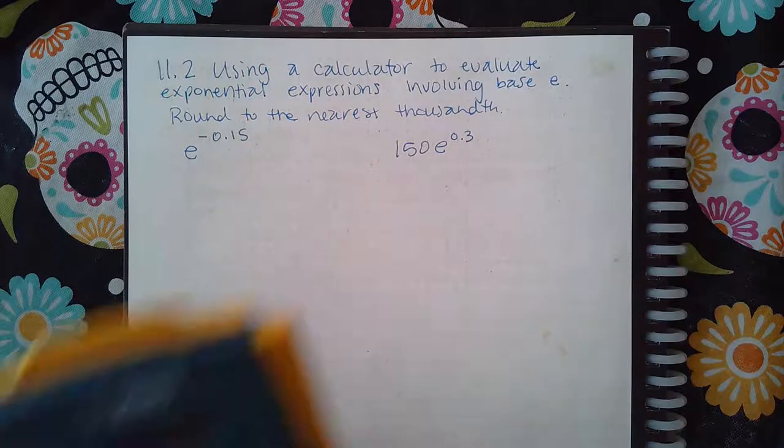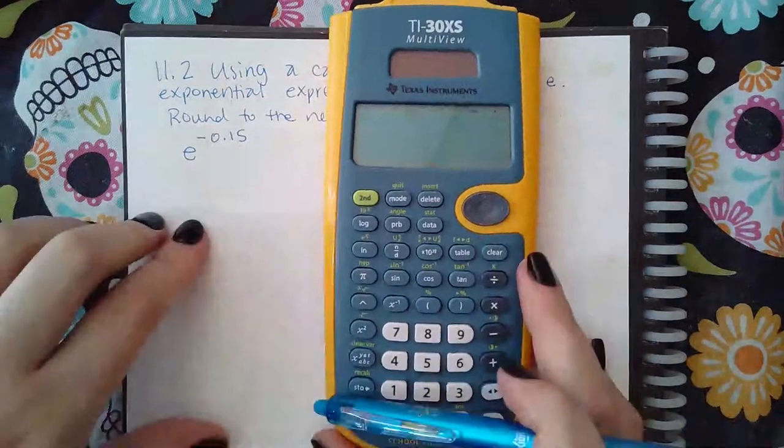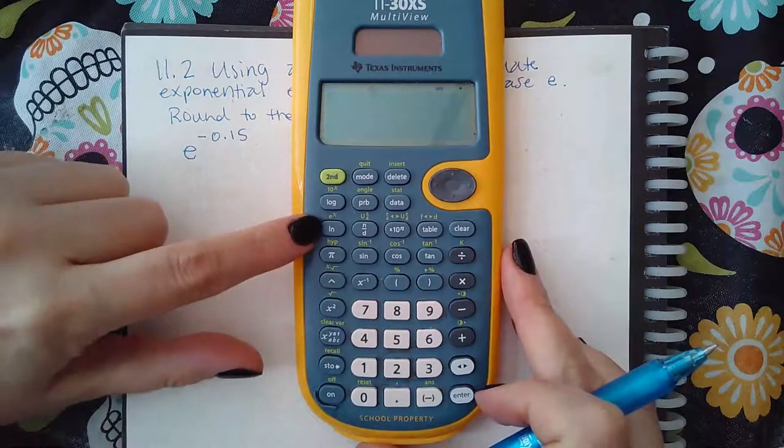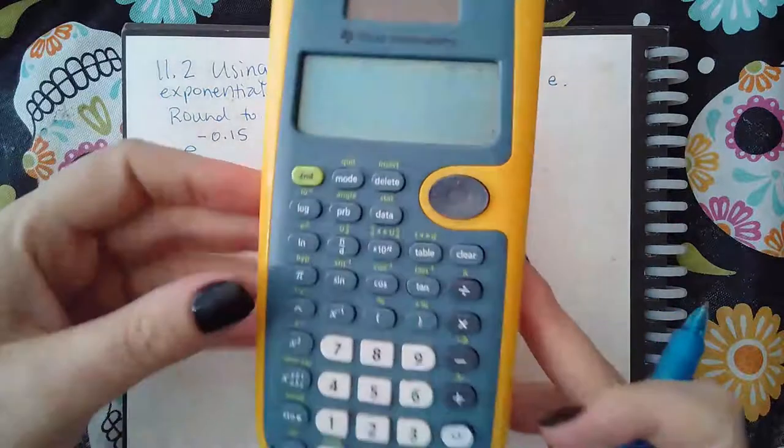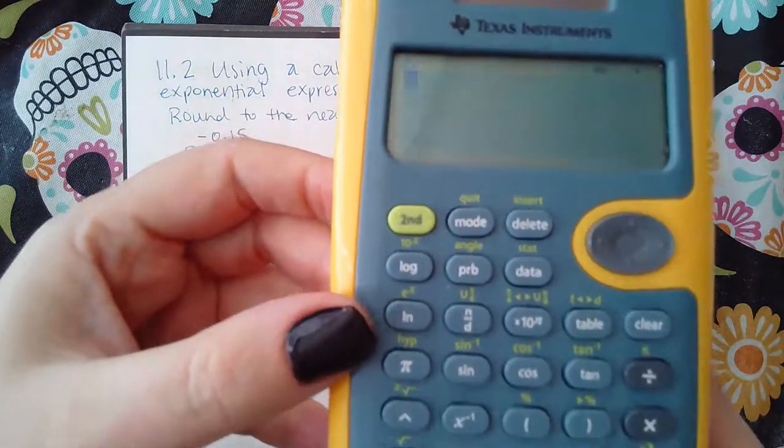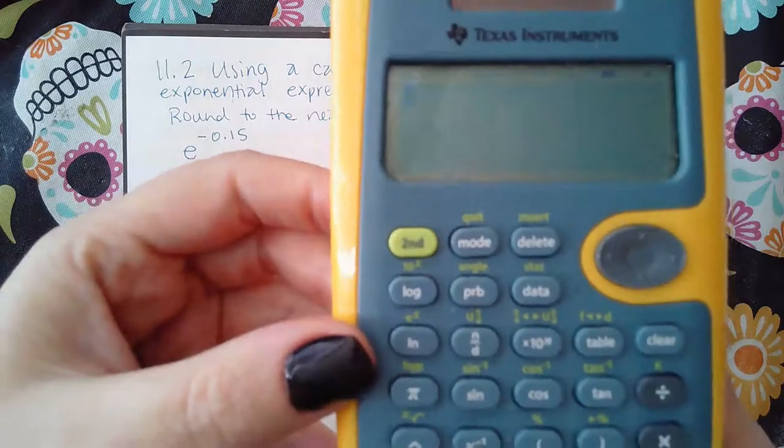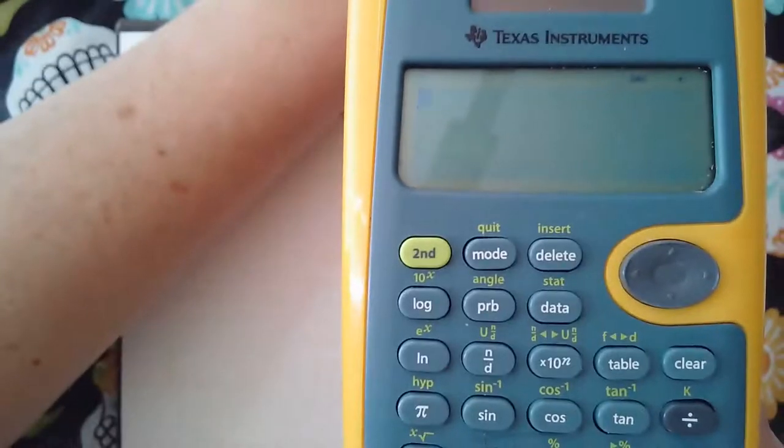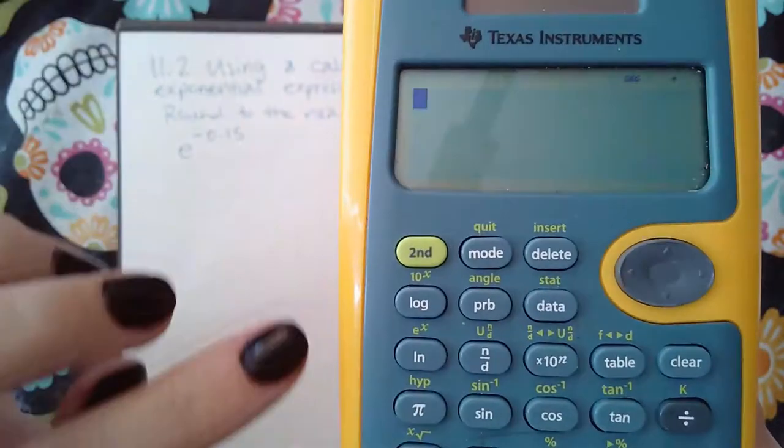Just like you have pi in a calculator, you do have an E button. My pi button on this calculator happens to be here. My E button in this calculator happens to be right above the LN. It's hard to tell, but that is an E. There we go, you can see it a little bit better. Sorry for all my eraser shavings everywhere.